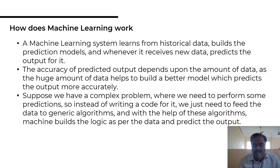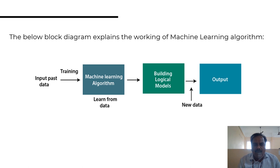Suppose you have a complex problem and need to perform some predictions. Instead of writing code, you just need to feed the data into a generic algorithm. With the help of this algorithm, the machine builds a model and predicts the outputs. Looking at the block diagram for machine learning: you input data into the machine learning algorithm, train and learn from the data, build a logical model, and then use that model to get predictions on new data.